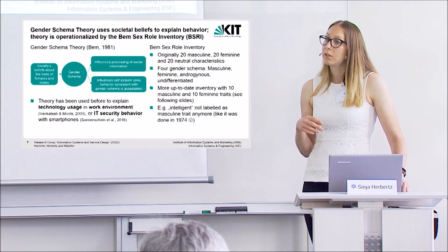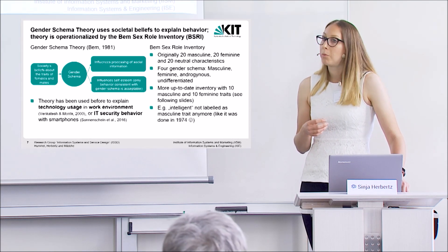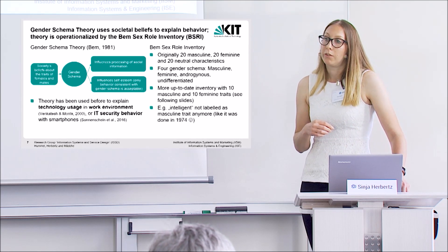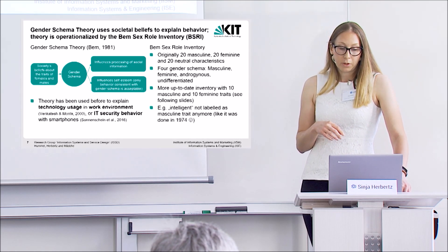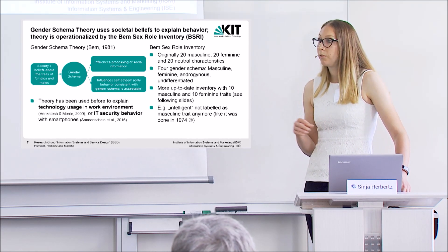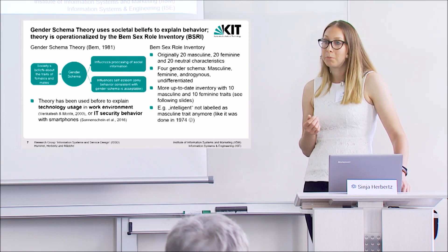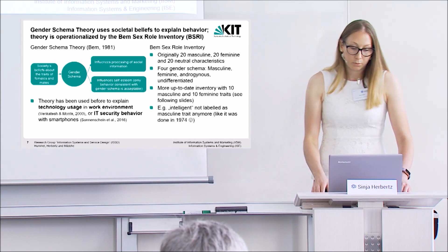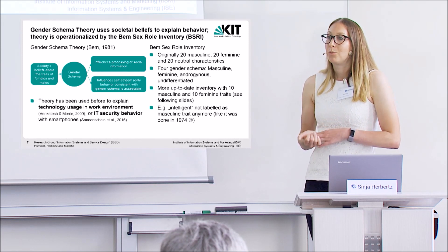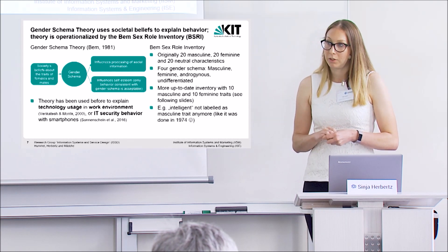The inventory consisted of about 60 characteristics, of which each 20 were feminine, masculine, and neutral traits. And then we can derive gender types that are feminine, masculine, androgynous, and undifferentiated. But in our studies, we have concentrated on the two important ones, which were masculine and feminine. And finally, we have to say that we have used a more up-to-date inventory, which only consisted of 10 masculine and 10 feminine traits.